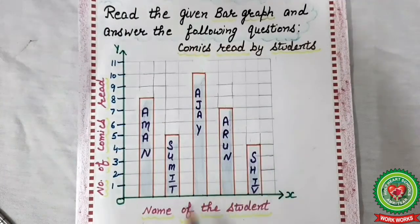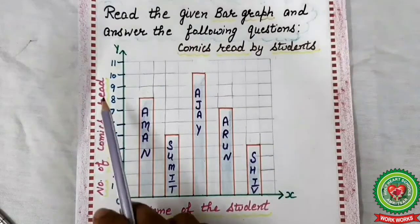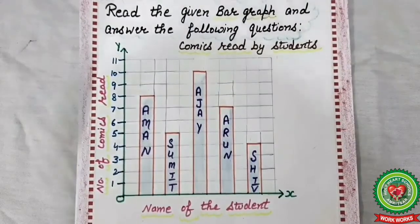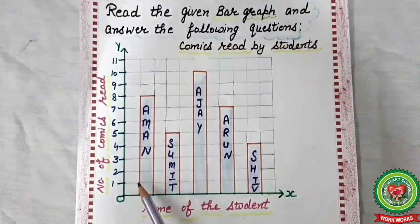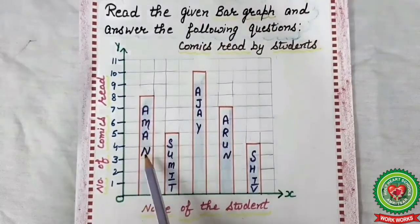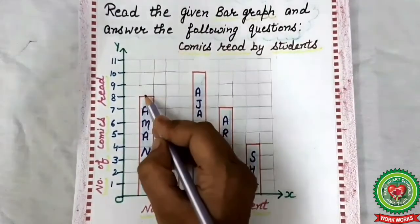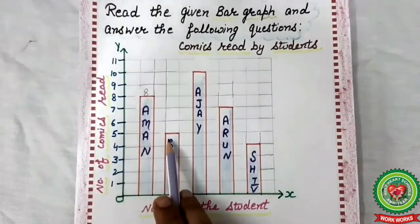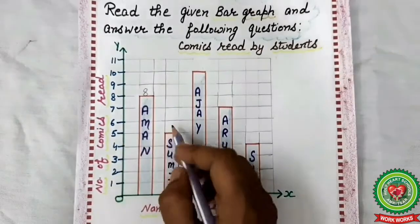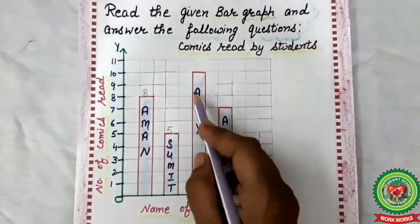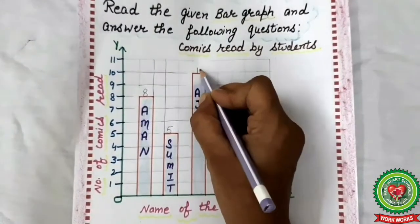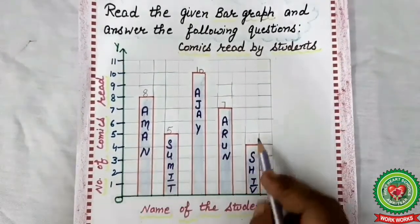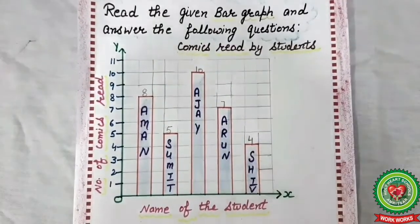It shows name of student and number of comics read. Now we will find how many comics read by each student. First, Aman: in front of eight, so Aman read eight comics. Next, Sumi read five comics. AJ is in front of ten, so it is ten. Arun read seven comics and last is Shiv who read four comics.